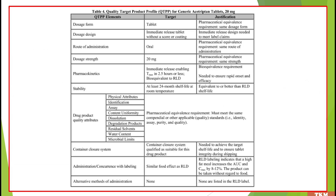Here is one more case study — a QTPP sheet for a generic acitretin tablet, 20 milligrams. As we can see, the dosage form, target, and justification are listed. All the important characteristics that can affect the quality of the product are mentioned, along with the target and the corresponding justification. This is how a QTPP sheet looks.